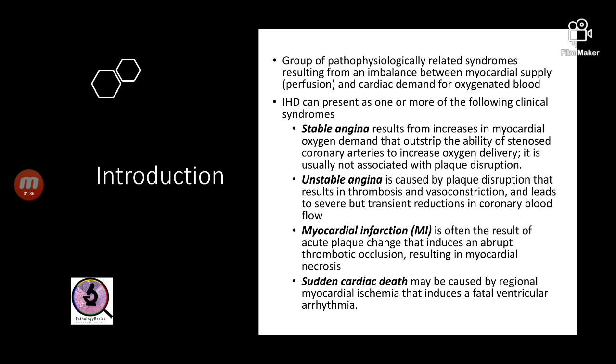Unstable angina, on the other hand, is caused by disruption of a plaque that has formed — it may be superimposed on an atherosclerotic plaque. That plaque gets disrupted and leads to severe but transient reductions in coronary flow, resulting in transient pain that is called unstable angina.